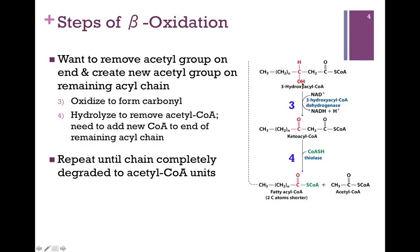Our next step is to oxidize the hydroxyl group to form the carbonyl. Those electrons will be passed to NAD+, and now we've generated NADH. Now we're ready to clip off the acetyl group — that's our first product in our first round — and we're going to attach the remaining acyl chain to a second molecule of coenzyme A. So we've shortened our chain by two carbon atoms and one acetyl-CoA, and now we're ready to take the remaining chain and send it back through the same four steps again. We repeat this cycle until we get to the last round, where our final round will give us two molecules of acetyl-CoA.